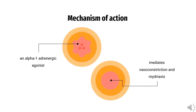Mechanism of Action: Phenylephrine is an alpha-1 adrenergic agonist that mediates vasoconstriction and mydriasis depending on the route and location of administration. Systemic exposure also leads to agonism of alpha-1 adrenergic receptors, raising systolic and diastolic pressure as well as peripheral vascular resistance. Increased blood pressure stimulates the vagus nerve, causing reflex bradycardia.